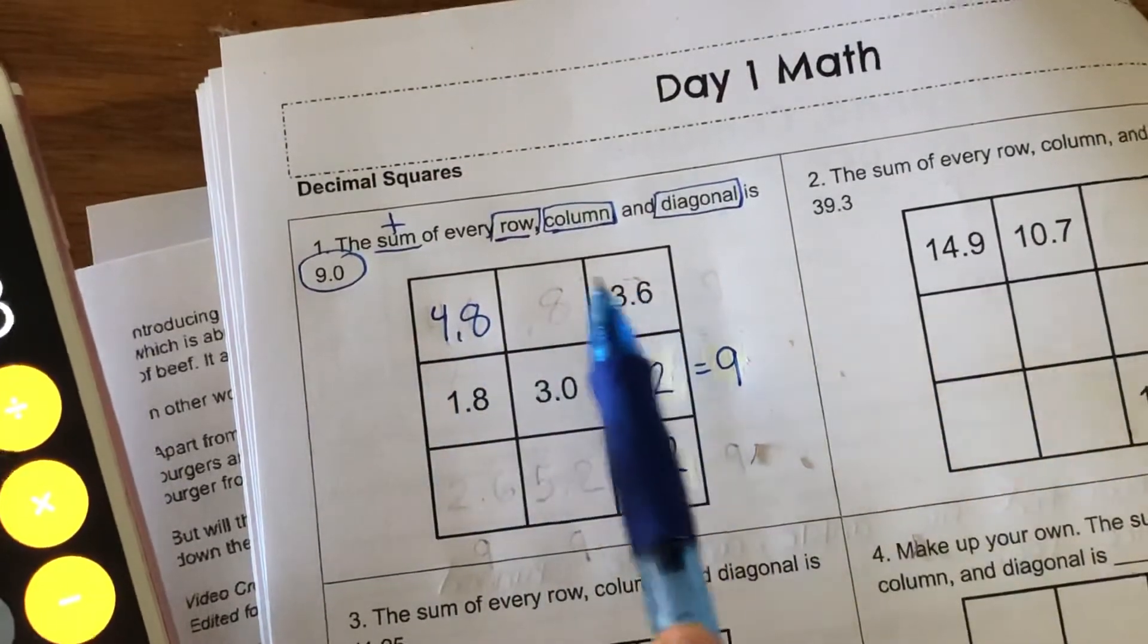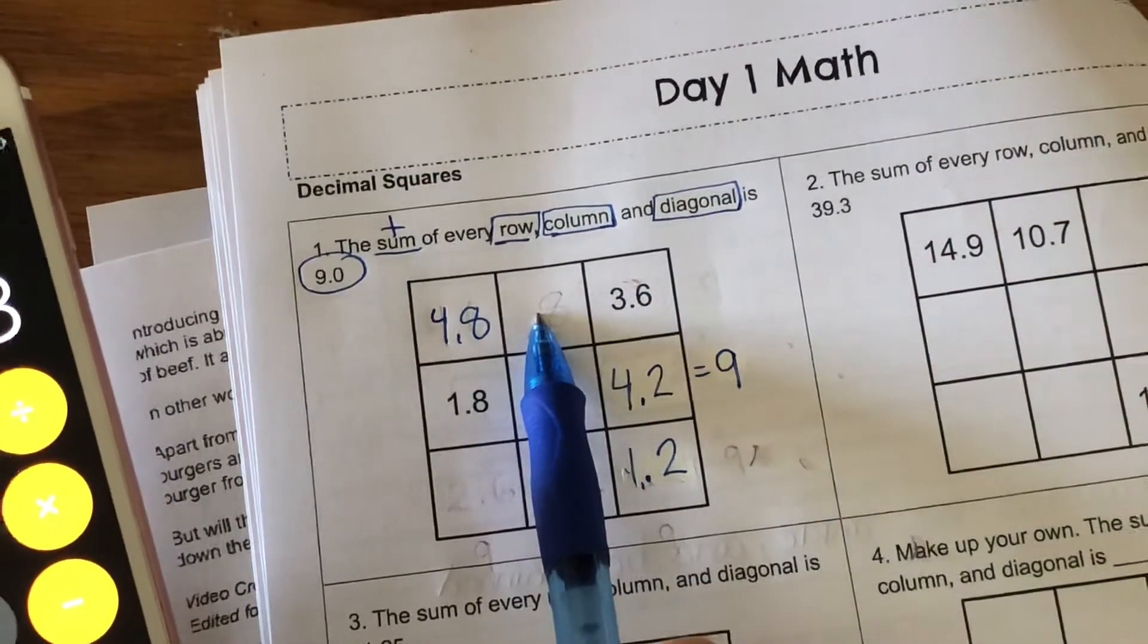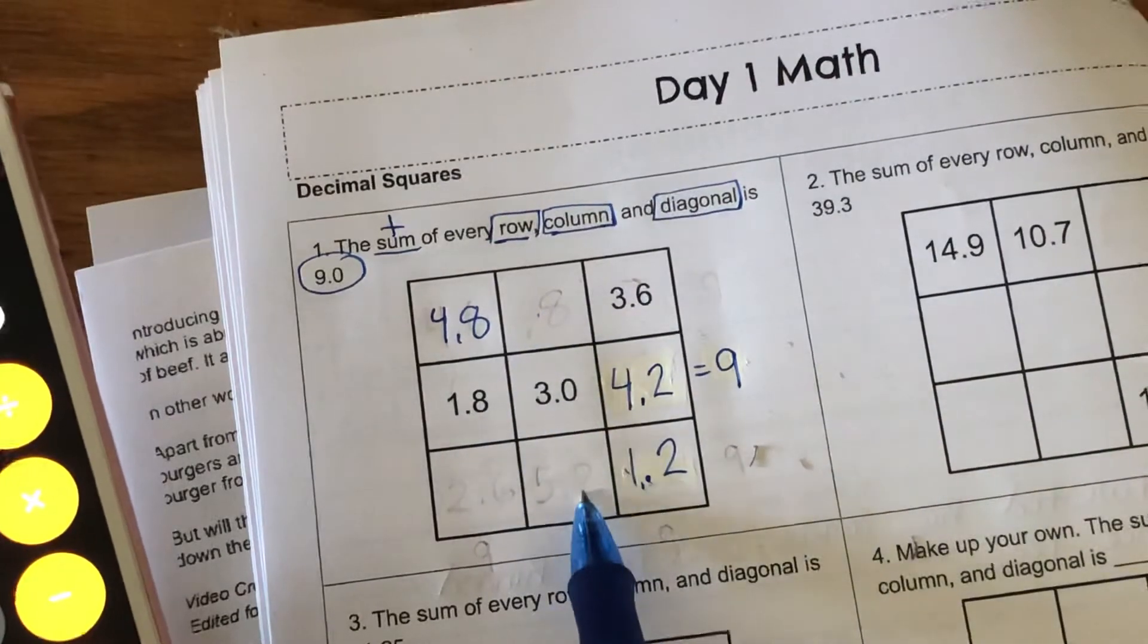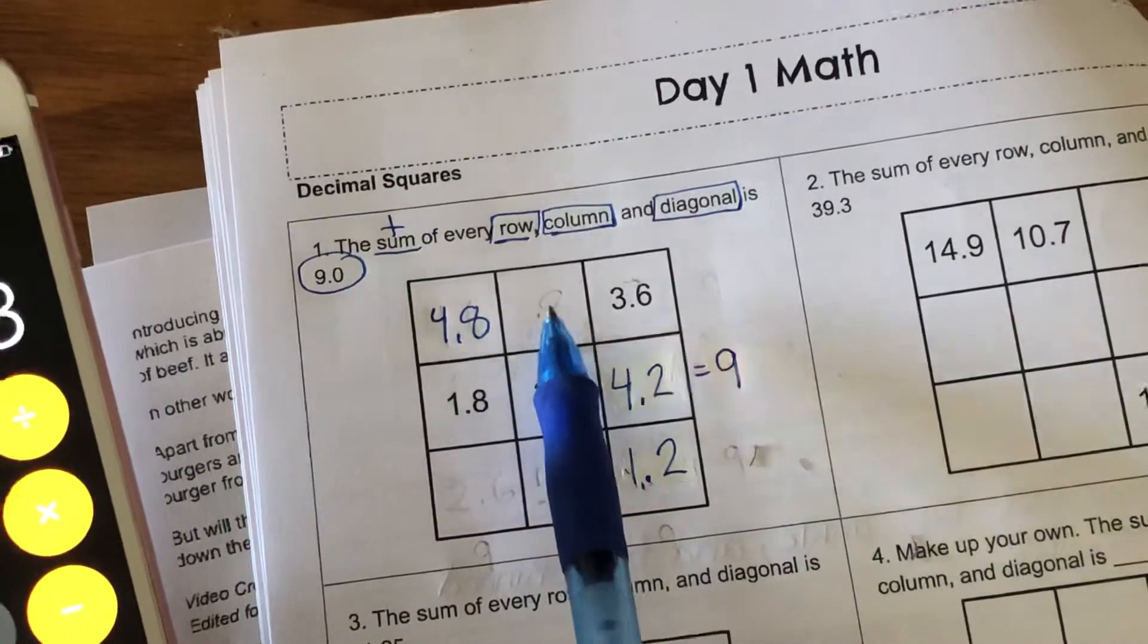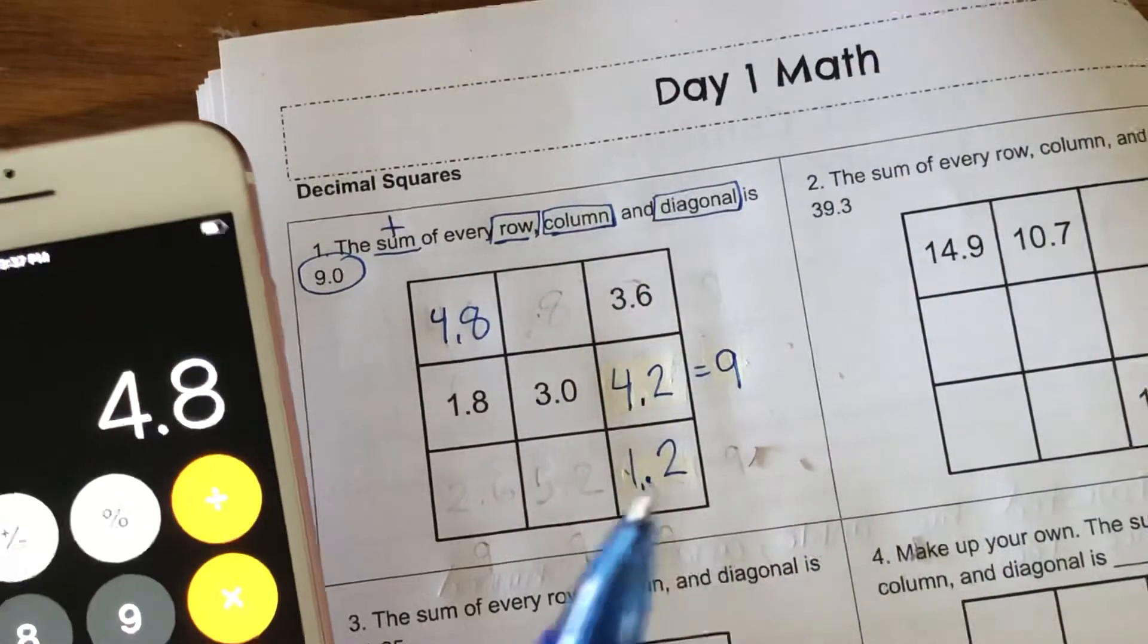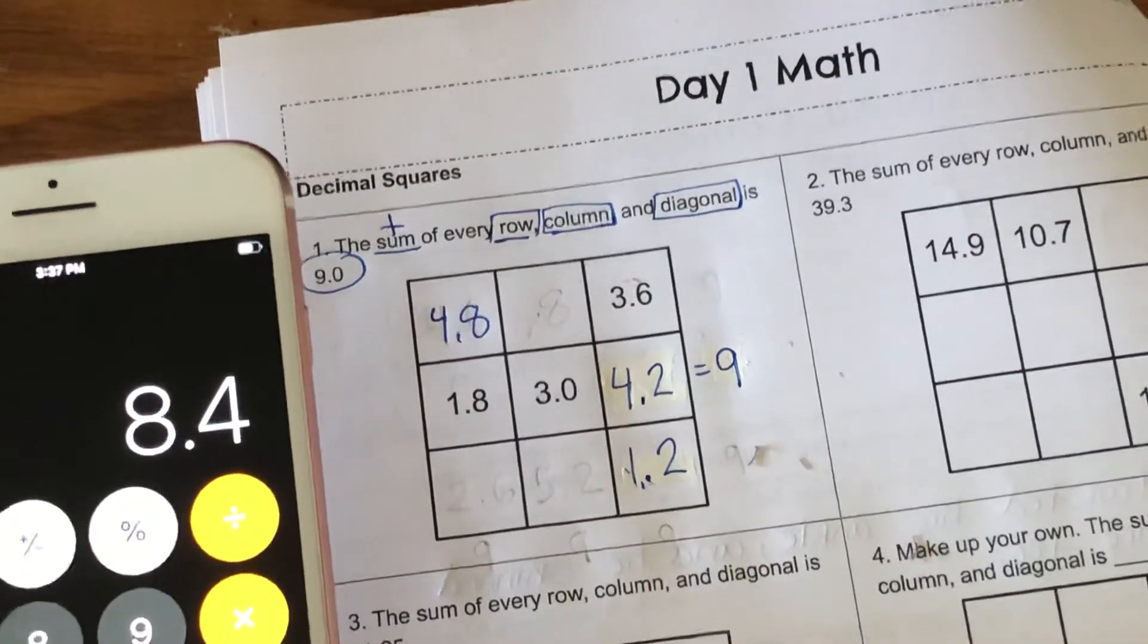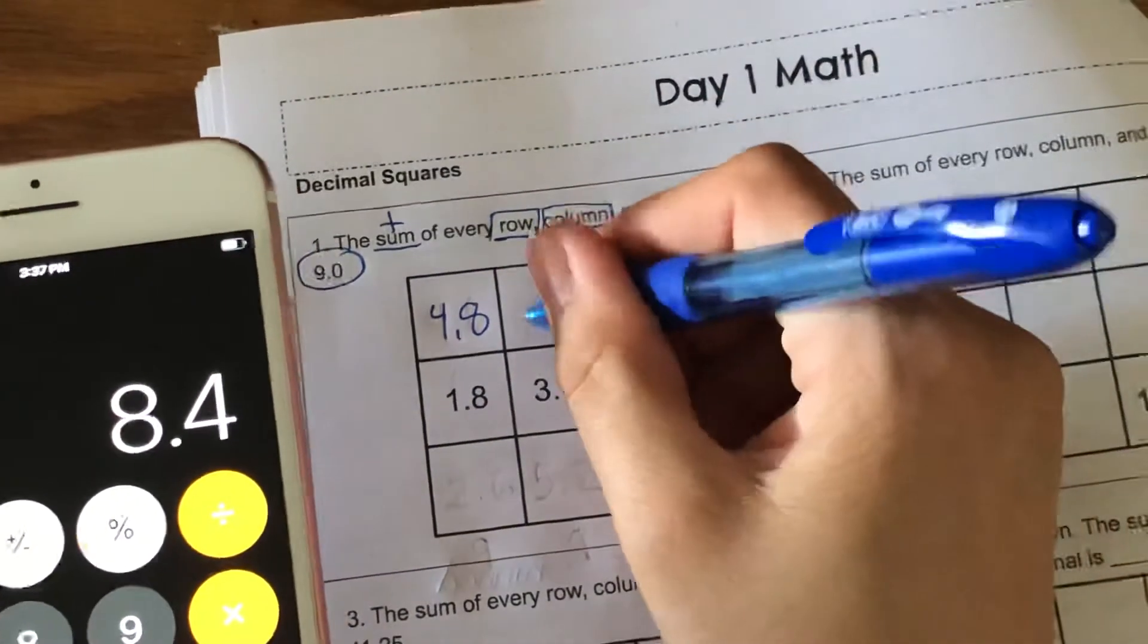Now I need to find this one. Remember, whatever the total is for this center box, it's gonna have to equal 9 down here. I'm gonna add 4.8 plus this 3.6, so that's 8.4. I don't need to do the math from that because to get 9 from here I just need to make this 0.6.